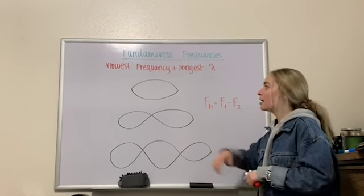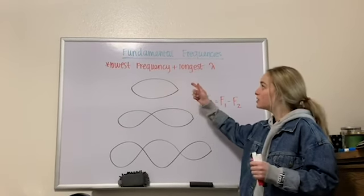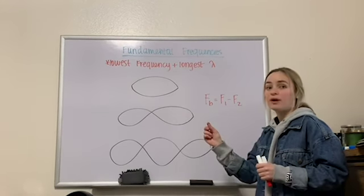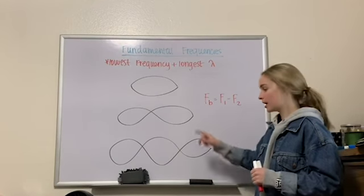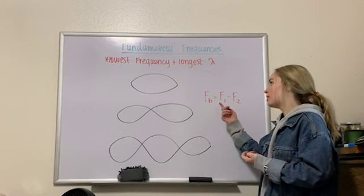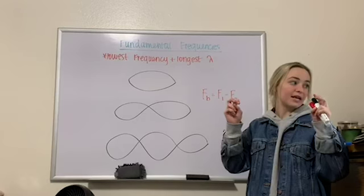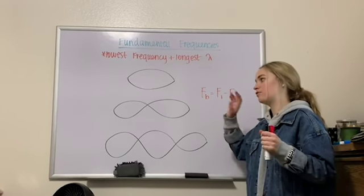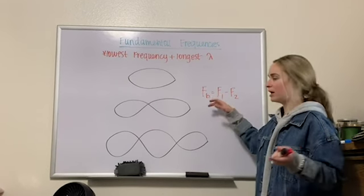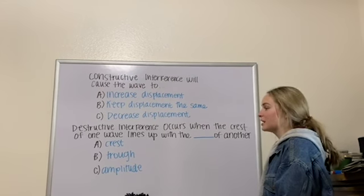We can refer to standing waves based on their frequencies. The fundamental frequency has the lowest frequency and the longest wavelength. Increasing the frequency and shortening the wavelength gives you the second harmonic, then the third harmonic. You can also calculate a beat frequency, which is the number of beats per second — the difference in frequencies between two oscillations. The formula is: frequency one minus frequency two.